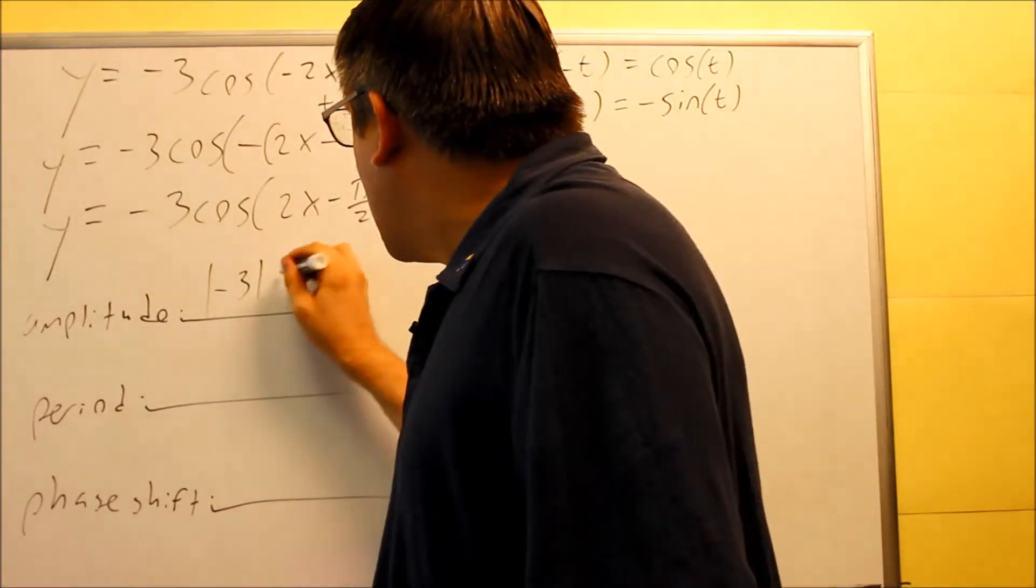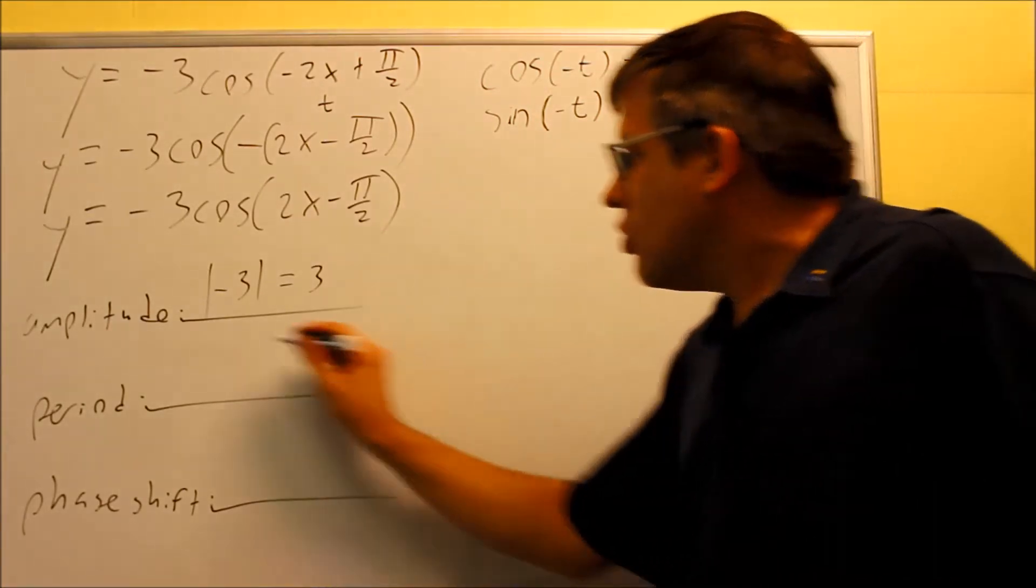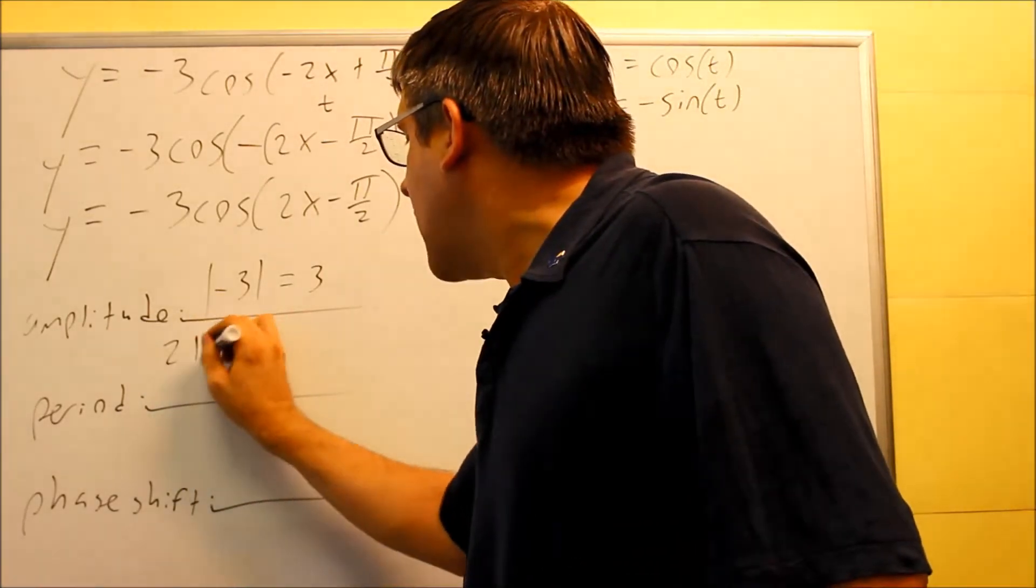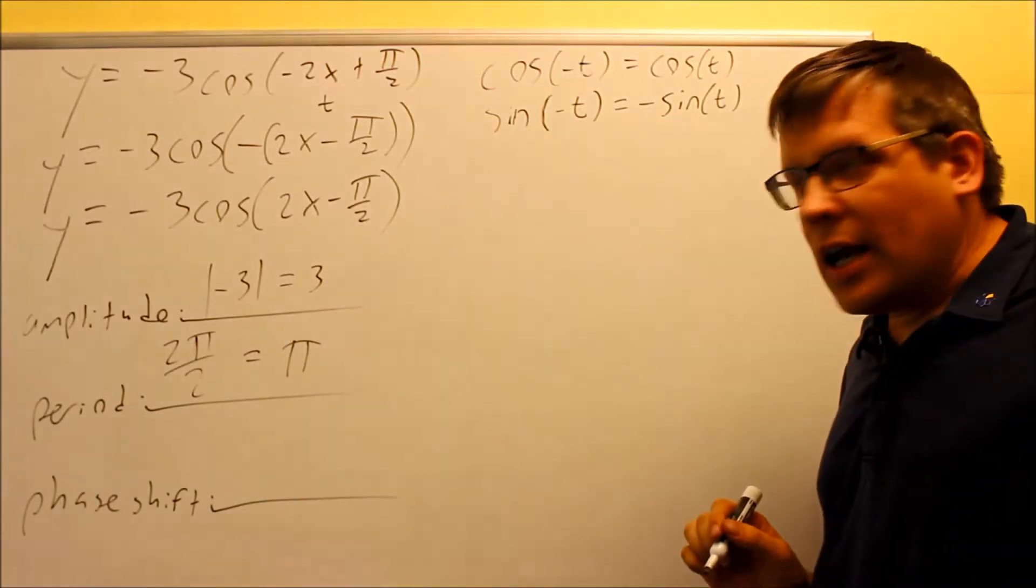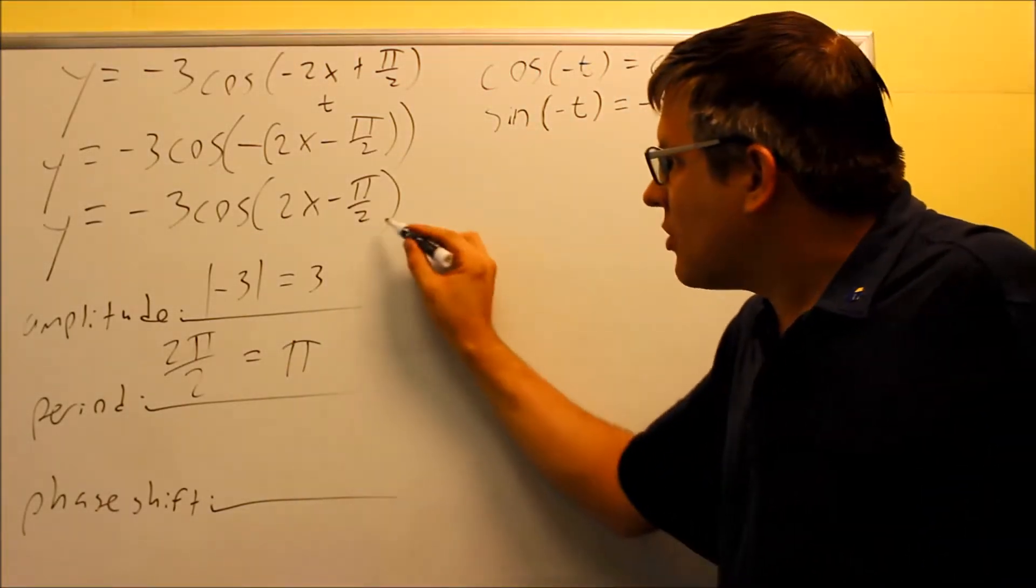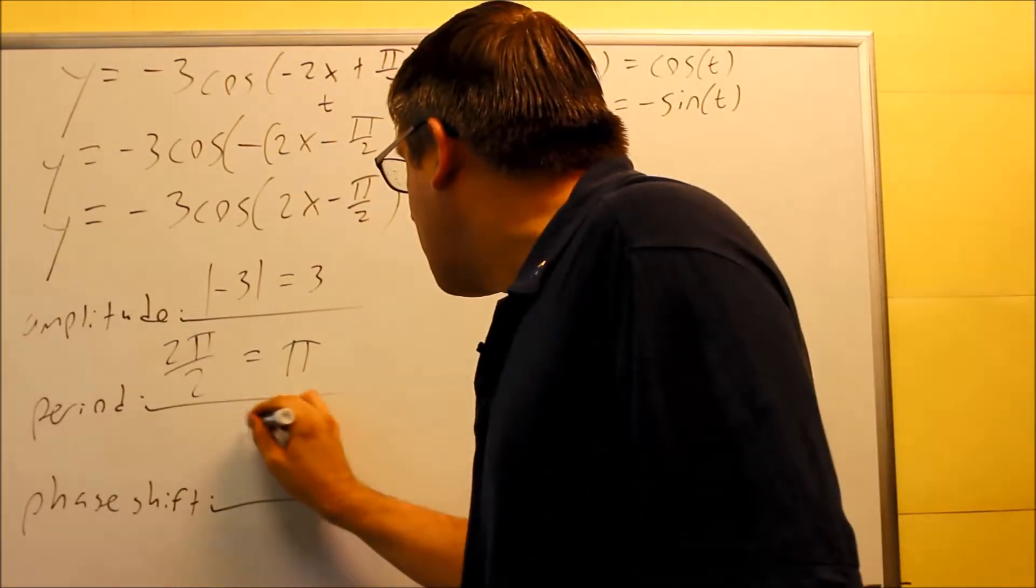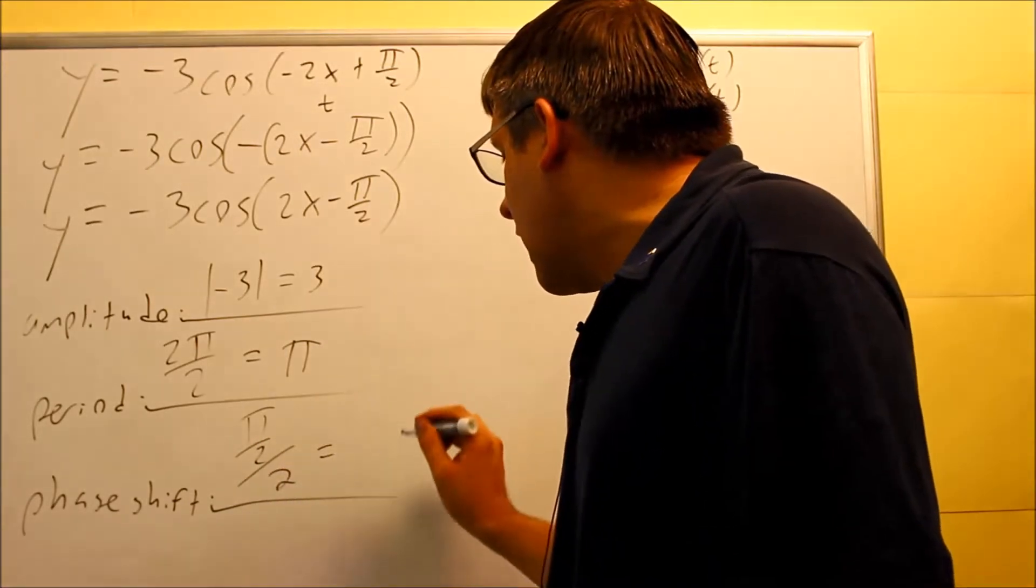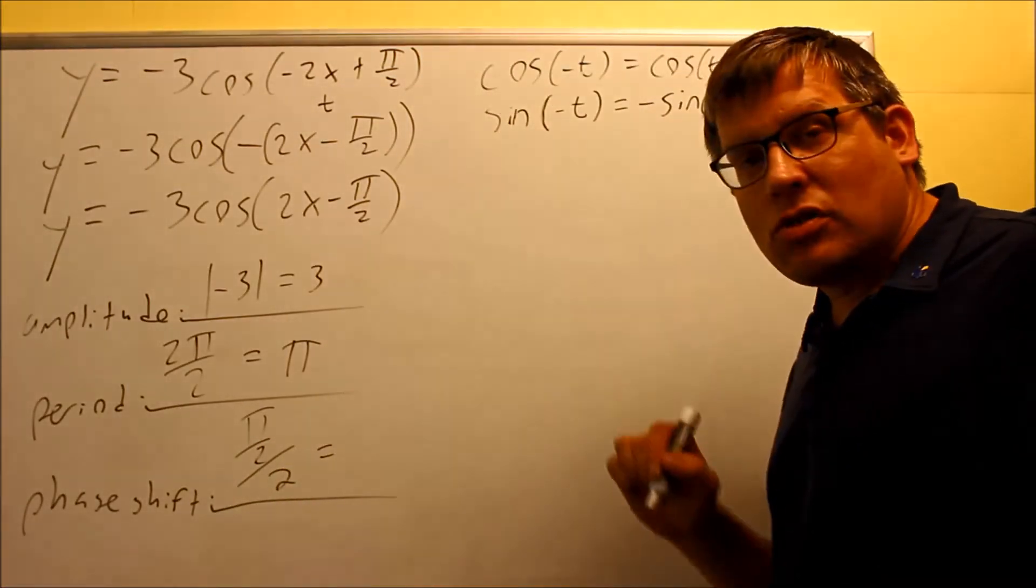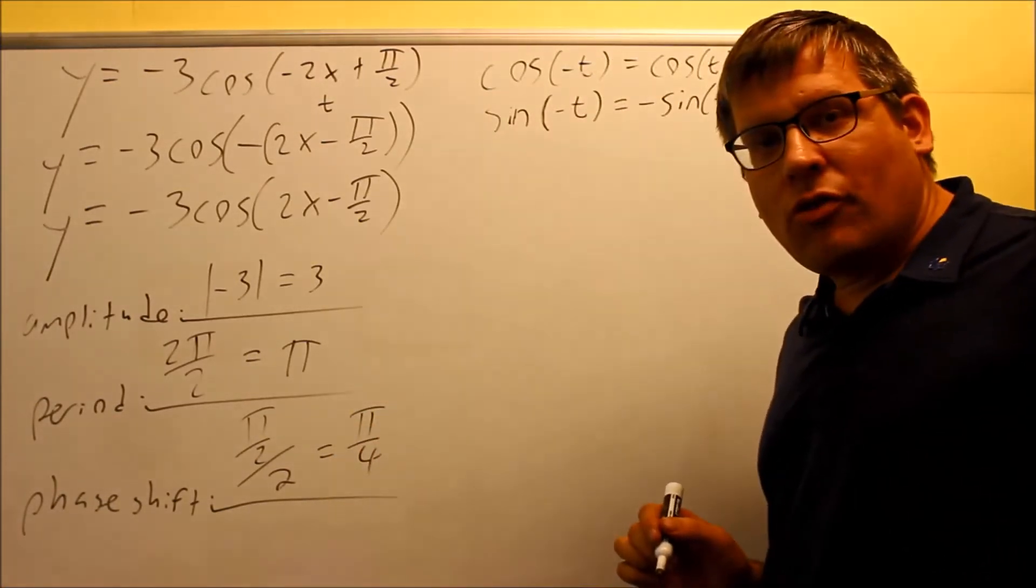Amplitude would be absolute value negative 3, is going to be 3. My period is 2 pi divided by b, so 2 pi over 2 is going to be pi. My phase shift, opposite sign of this number over b. So opposite sign of negative pi over 2 would be positive pi over 2. We're dividing this by 2. And when I do that, I have pi over 2 times 1 half. You're going to get pi over 4 for your phase shift.